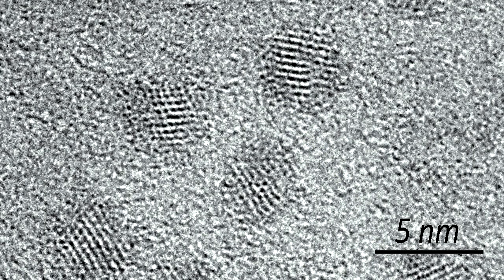Transmission electron microscope images of the synthesized zinc telluride will show them being roughly spherical with a diameter of about 3 nanometers.